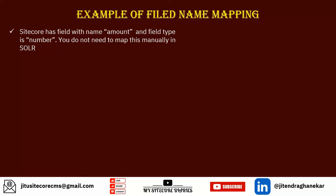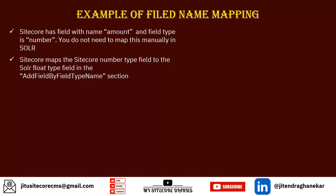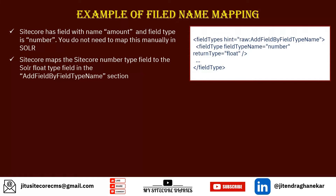You do not need to map this manually. Sitecore maps the Number type field to a Solr Float type field. The field name format is defined in the `addFieldByFieldTypeName` section of the configuration, where Number is mapped to Float.